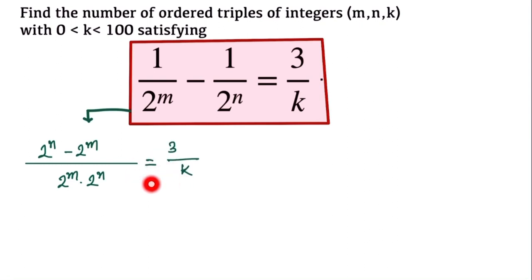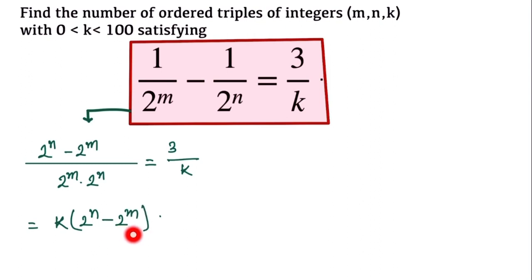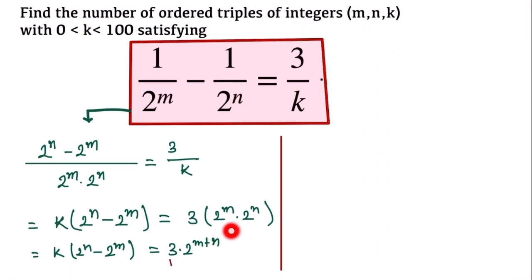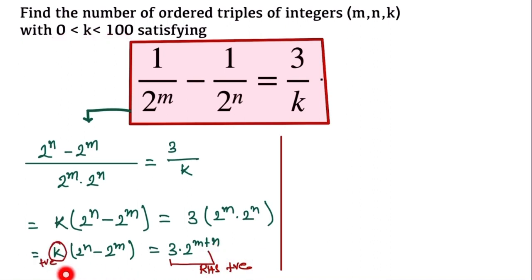Now we cross-multiply, so we can write: k times (2^n minus 2^m) equals 3 times 2^m times 2^n. Since the base is the same and the powers add, the right-hand side becomes 3 times 2^(m+n). Since k lies between 0 and 100, it is positive.